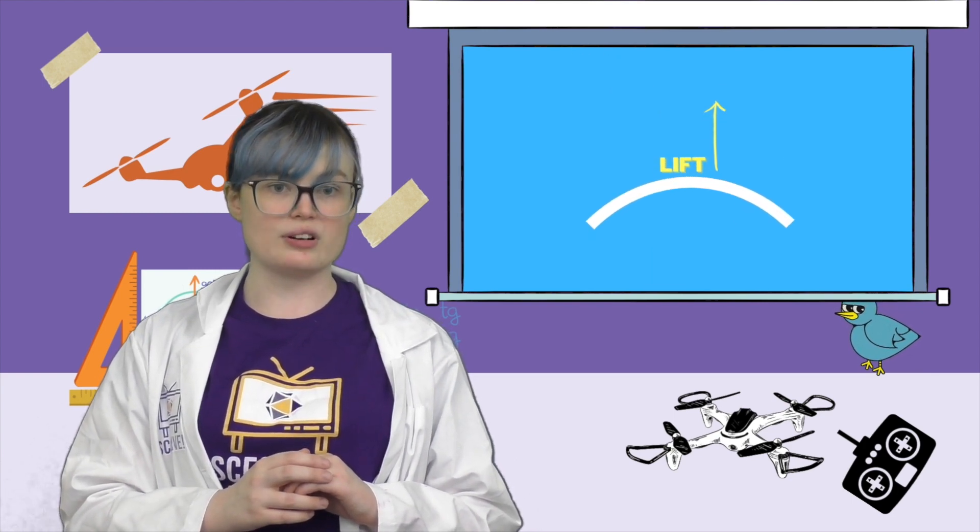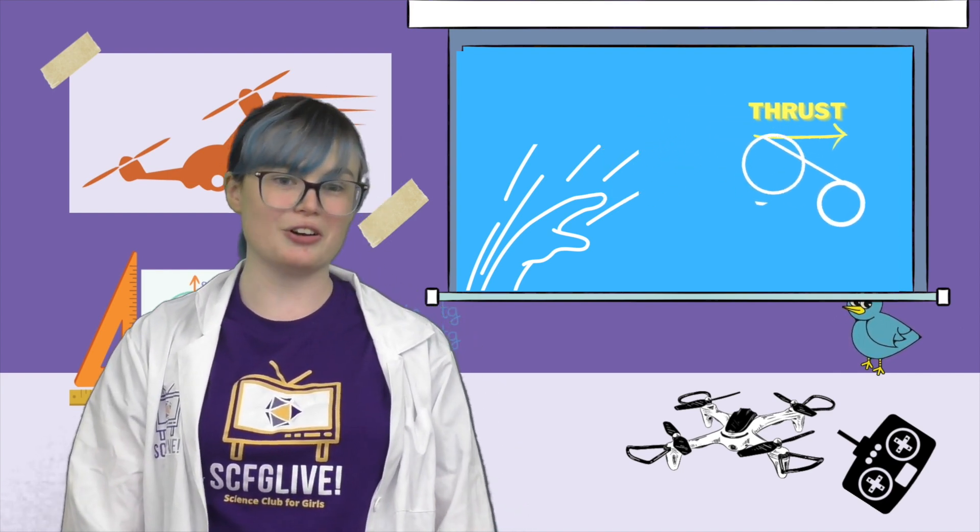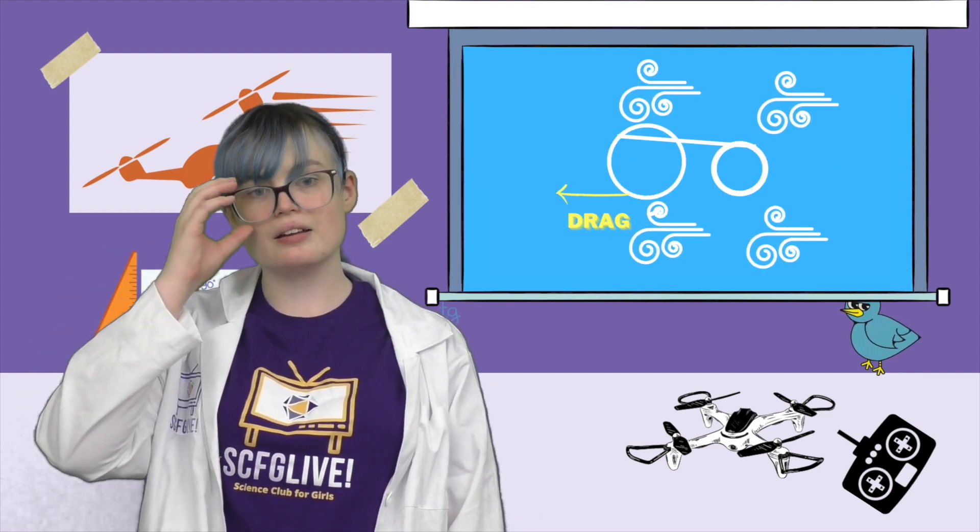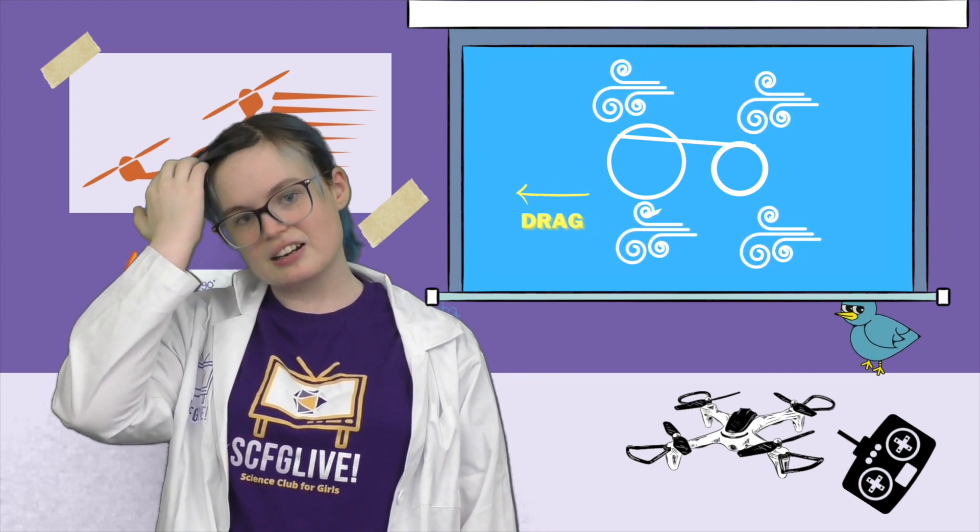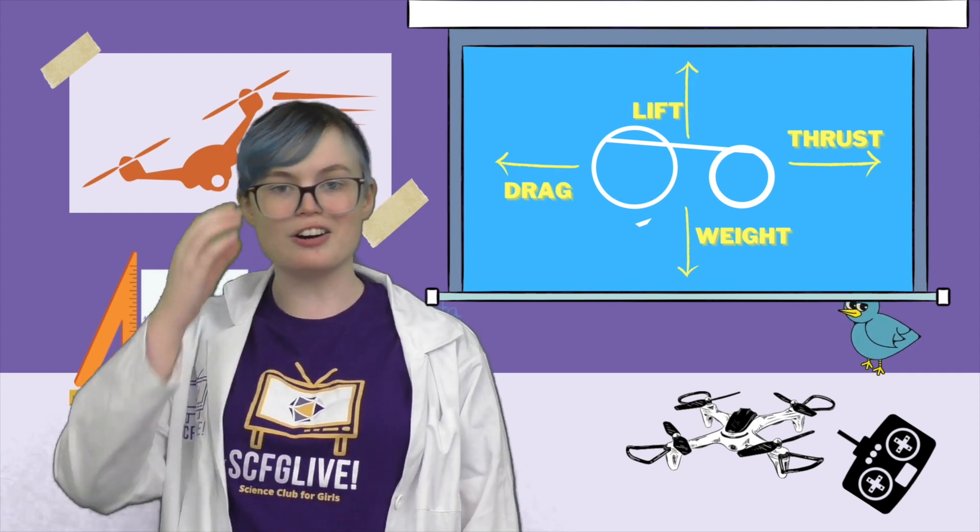Wasn't that cool? Now how do those four forces that I mentioned earlier work to help our glider fly? Well, the curved surfaces on the top of the glider help to generate an upward force called lift. This lift force is working against another force called weight or gravity that is pulling the glider down towards the ground. When we throw the glider with our arm, we are generating a forward force called thrust. And this thrust force is working against a force called drag, which is caused by the air around the glider. So weight, thrust, drag, and lift are the four forces that are acting on our hoop glider.